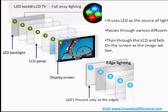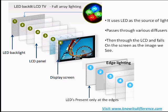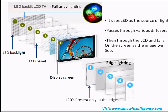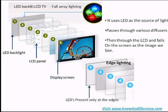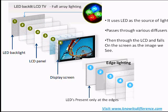Instead of using a white LED, separate LEDs for red, green, and blue are used for producing better picture quality. There are two types of LED backlighting: one is referred to as edge lighting, and the other is called full-array lighting.